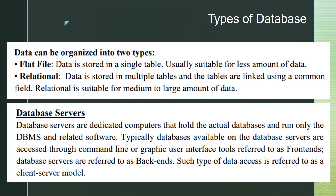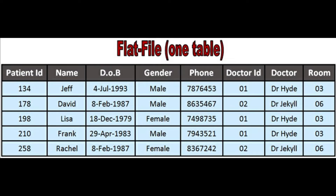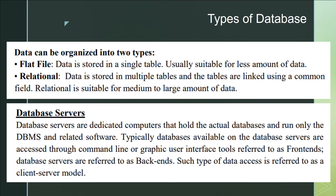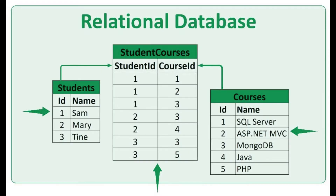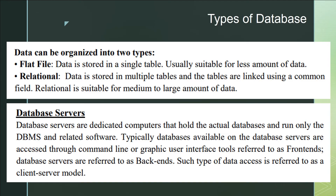One is the flat file system and the other is relational. In a flat file system, data is stored in a single table with multiple columns, and it is usually suitable for a smaller amount of data where the number of records is less. In a relational database, data is stored in multiple tables and the tables are linked using a common field. We use relational databases where the number of records is larger.